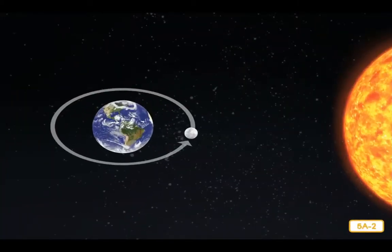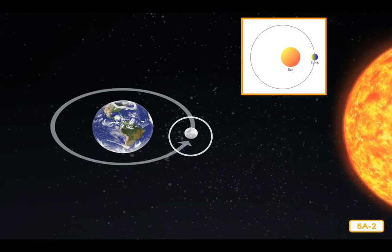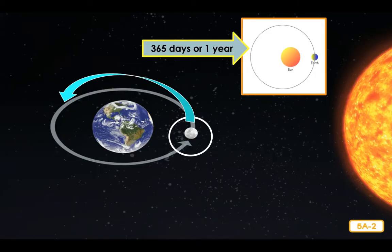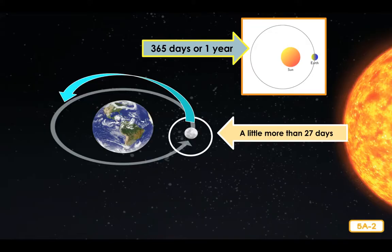While Earth orbits or revolves around the sun, the moon orbits or revolves around Earth. It takes 365 days or one year for Earth to orbit the sun. It takes a little more than 27 days, or about a month, for the moon to make a complete trip around the Earth. The moon also rotates on its axis as it orbits Earth — in fact, the moon rotates exactly once as it orbits Earth exactly once. This remarkable feature keeps the same side of the moon always facing Earth.